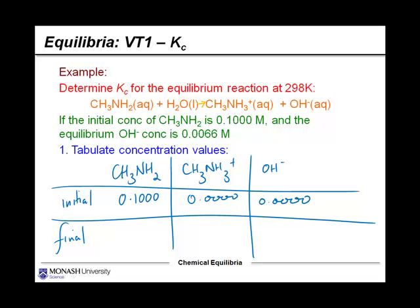So let's just call that 0.0. We don't have any of the products. Now as the reaction proceeds, you can see it says at equilibrium, the concentration of OH- is... So we've made some of this stuff.